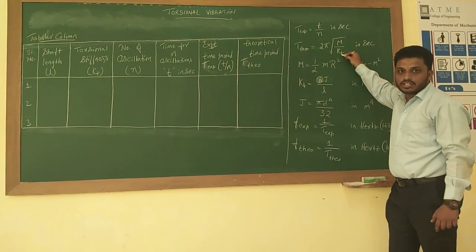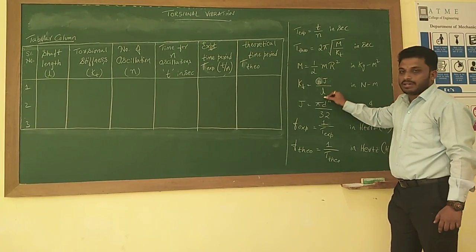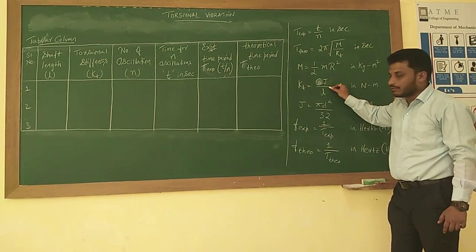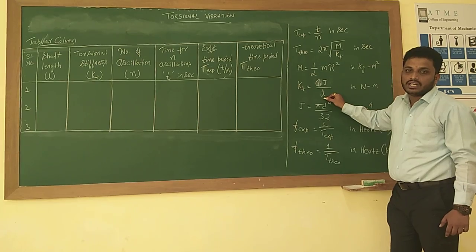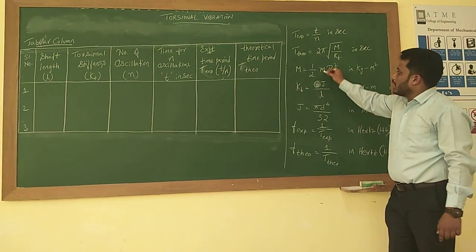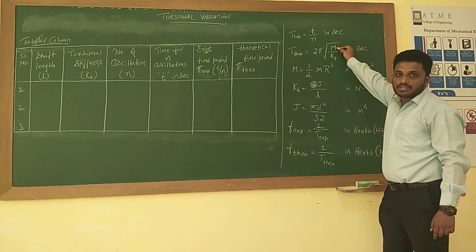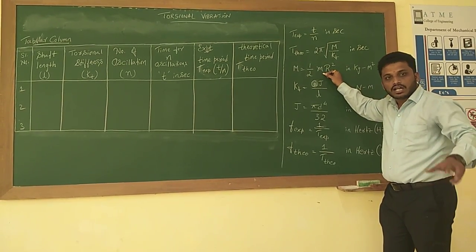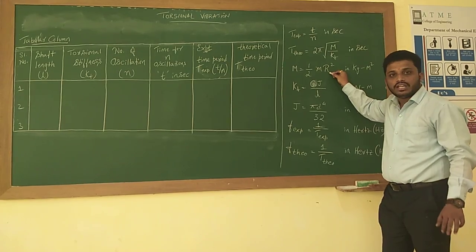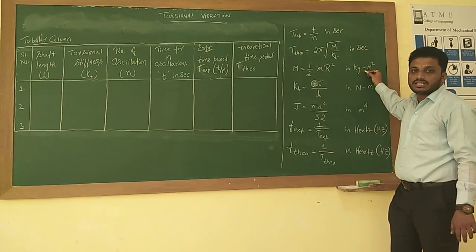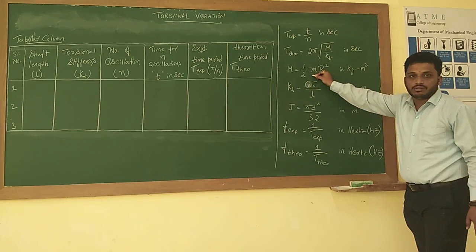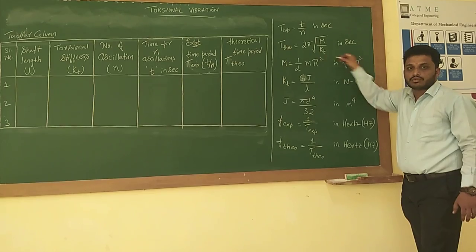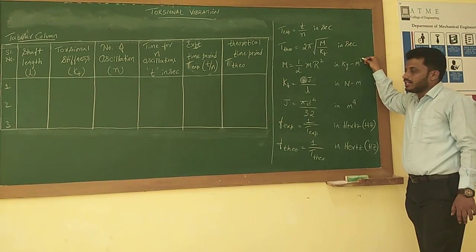To calculate the torsional stiffness value, we have the formula GJ/L, where G is the modulus of rigidity, J is the polar moment of inertia, and L is the length, which varies for each reading. The mass moment of inertia m is half m r squared, where m is the mass of the rotor disc and r is the radius of the rotor disc, expressed in kg·m².